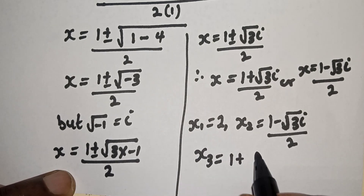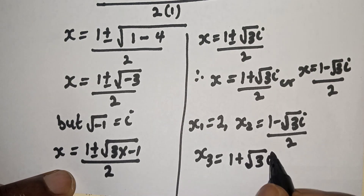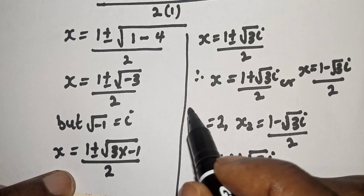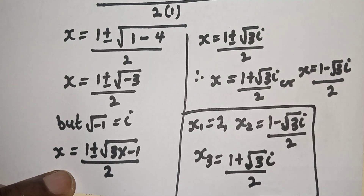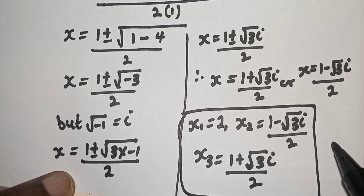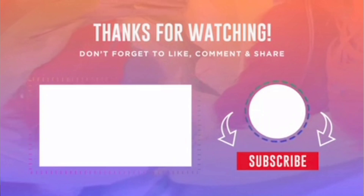S is equal to 1 plus square root of 3 i over 2, and S is equal to 1 minus square root of 3 i over 2. These are the values of S. If you enjoyed the class, please don't forget to like, share, comment, and subscribe. Thank you.